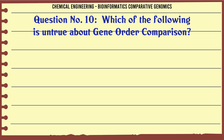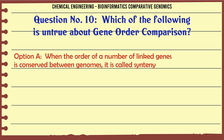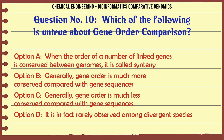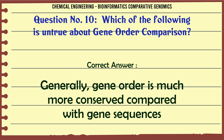Which of the following is untrue about gene order comparison? a. When the order of a number of linked genes is conserved between genomes, it is called synteny. b. Generally, gene order is much more conserved compared with gene sequences. c. Generally, gene order is much less conserved compared with gene sequences. d. It is in fact rarely observed among divergent species. The correct answer is: generally, gene order is much more conserved compared with gene sequences.